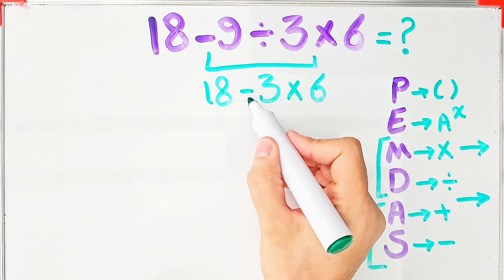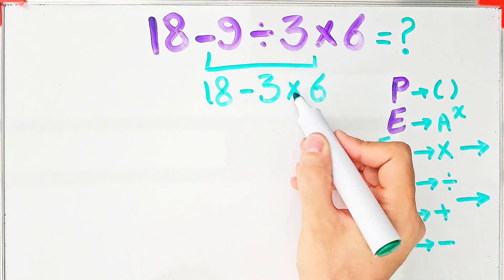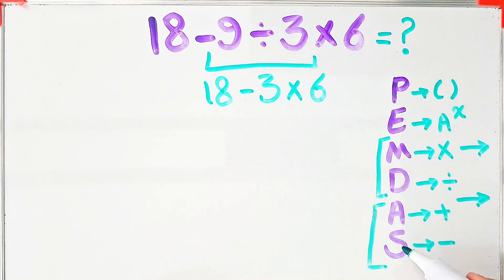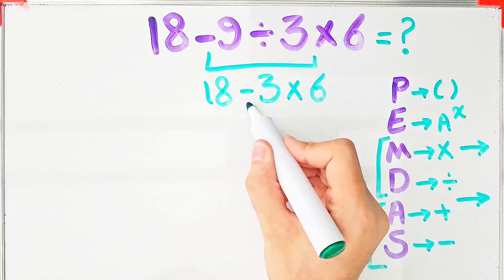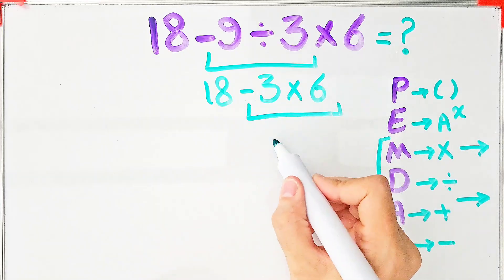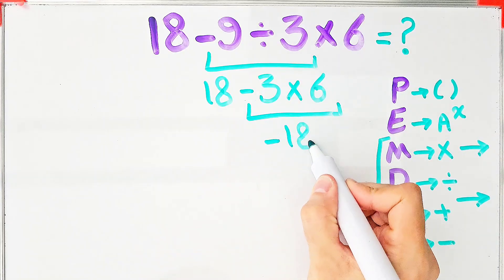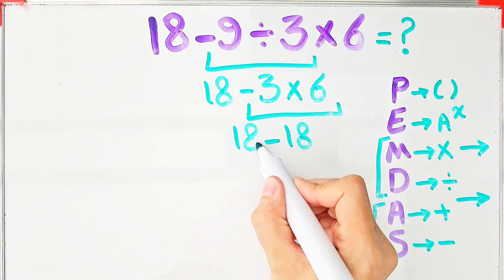Now we have subtraction and multiplication. First, we do this multiplication because the multiplication has higher priority than subtraction. Negative 3 times 6 equals negative 18. And 18 minus 18 equals 0.